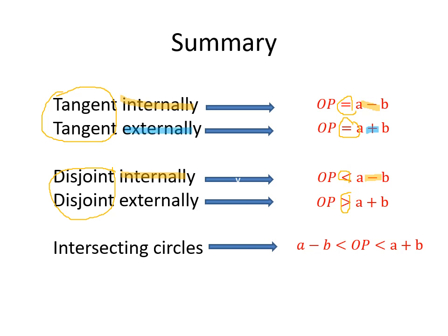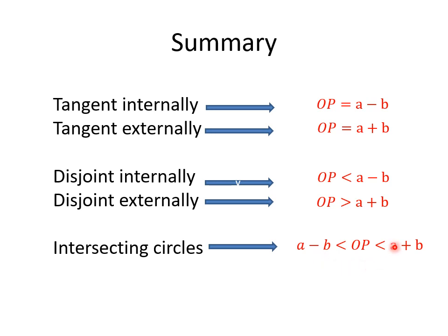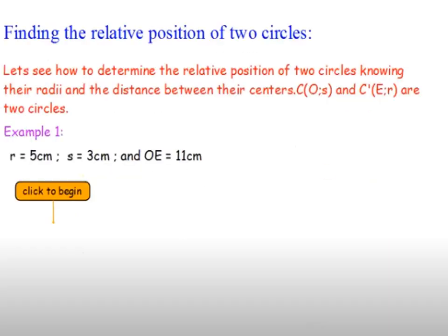So: equal with plus → tangent externally; greater-than with plus → disjoint externally; equal with minus → tangent internally; less-than with minus → disjoint internally. The final case — intersecting circles — is the easiest: OP is between A minus B and A plus B.